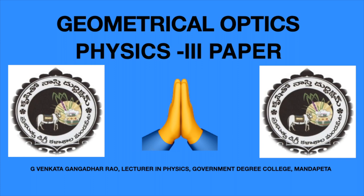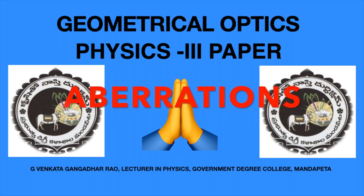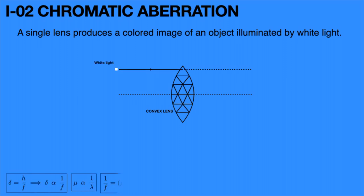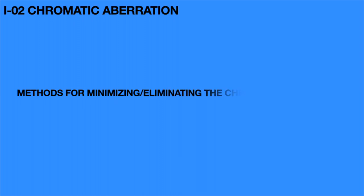Hello everyone. Welcome to the third topic in unit 1, that is Aberrations. Last class we discussed about chromatic aberration. Now we will discuss about the elimination of chromatic aberration — that means methods for minimizing or complete elimination of chromatic aberration. In this chromatic aberration elimination, first and foremost, an achromatic doublet is used for minimizing the chromatic aberration.